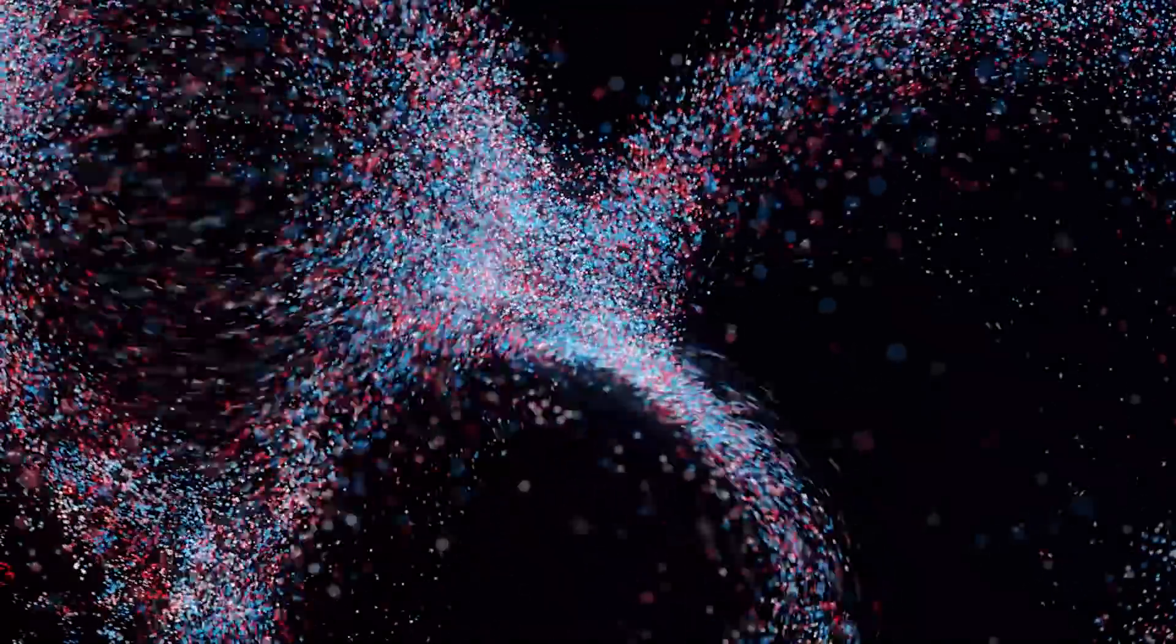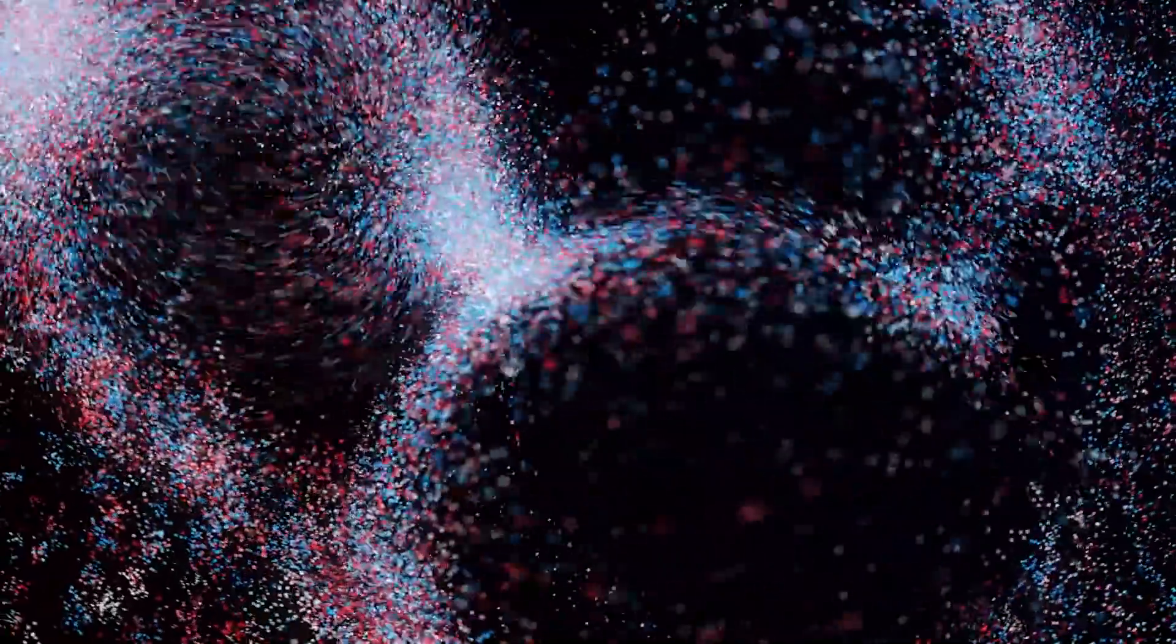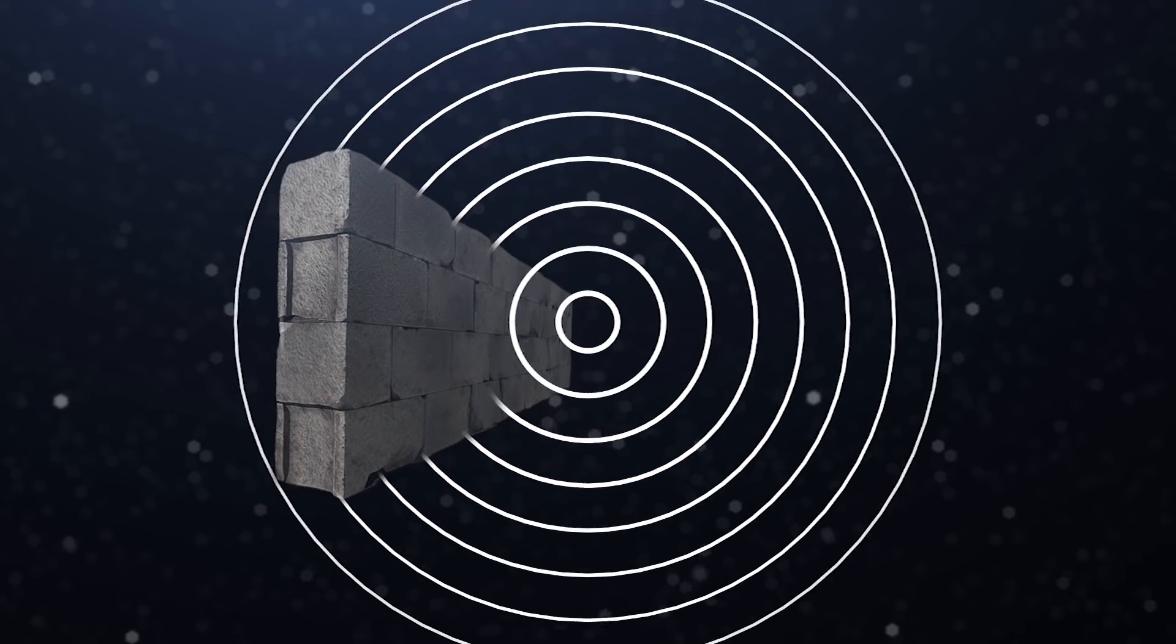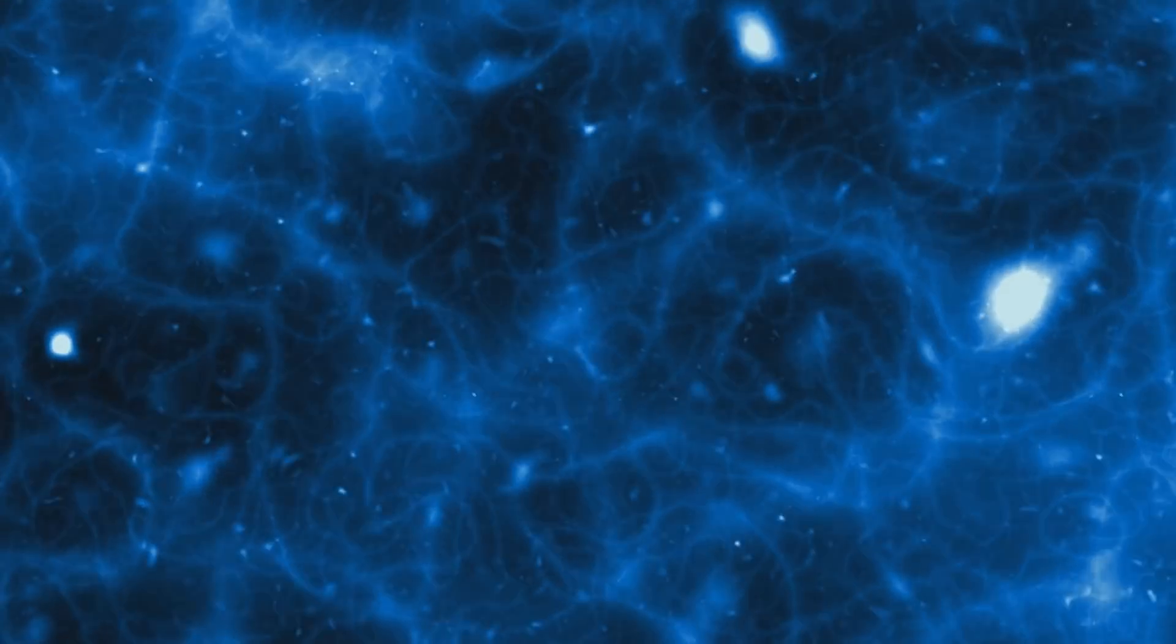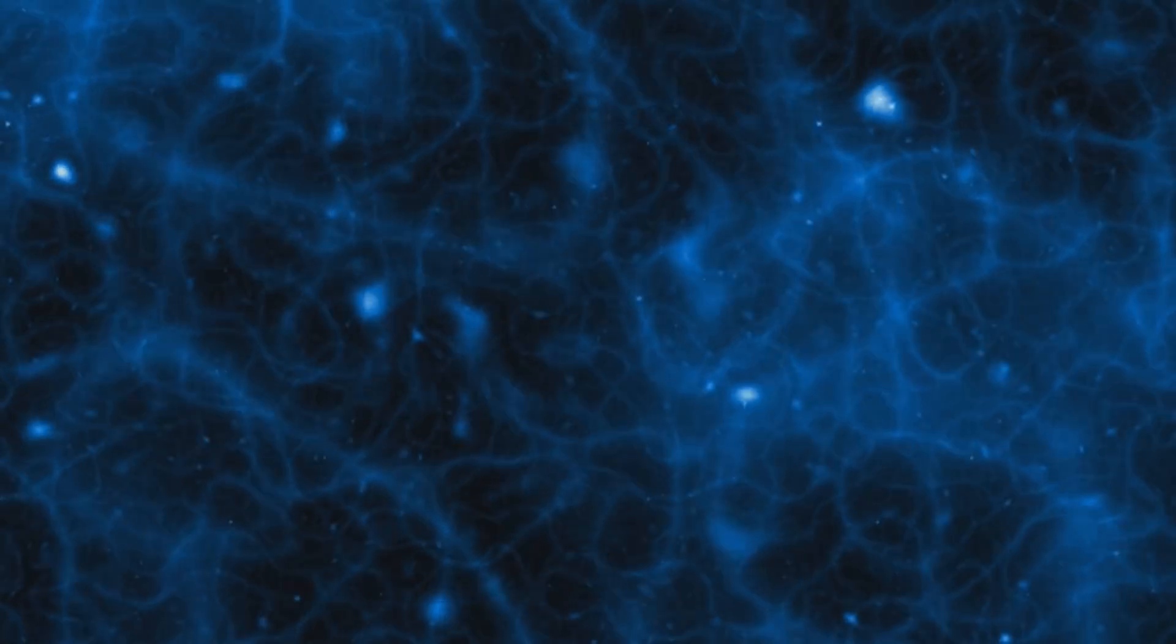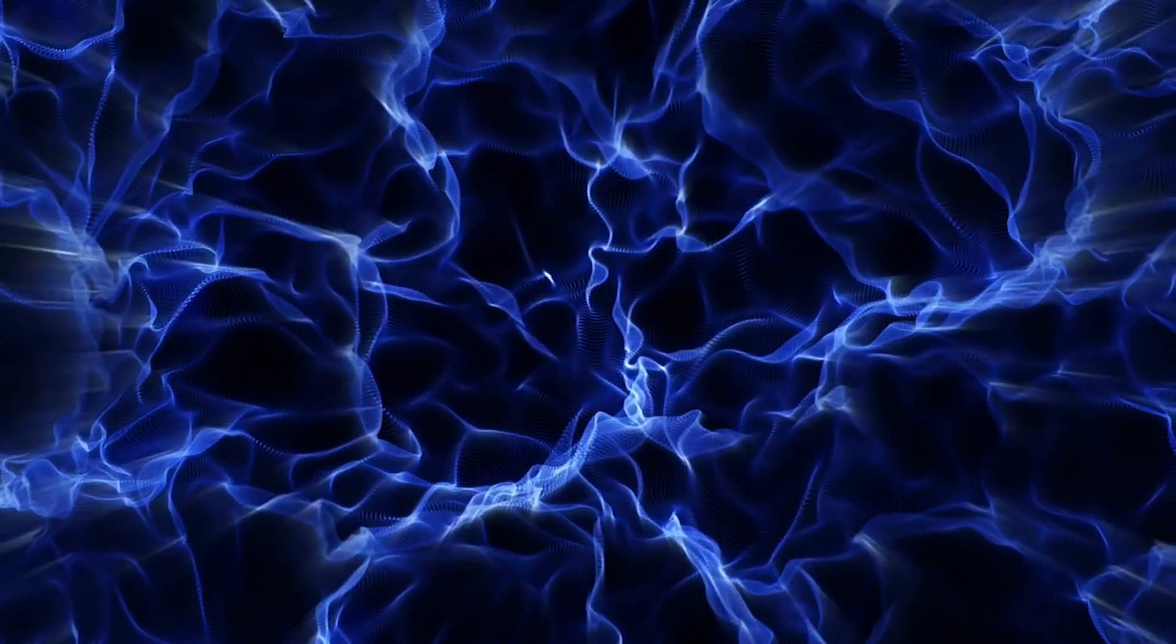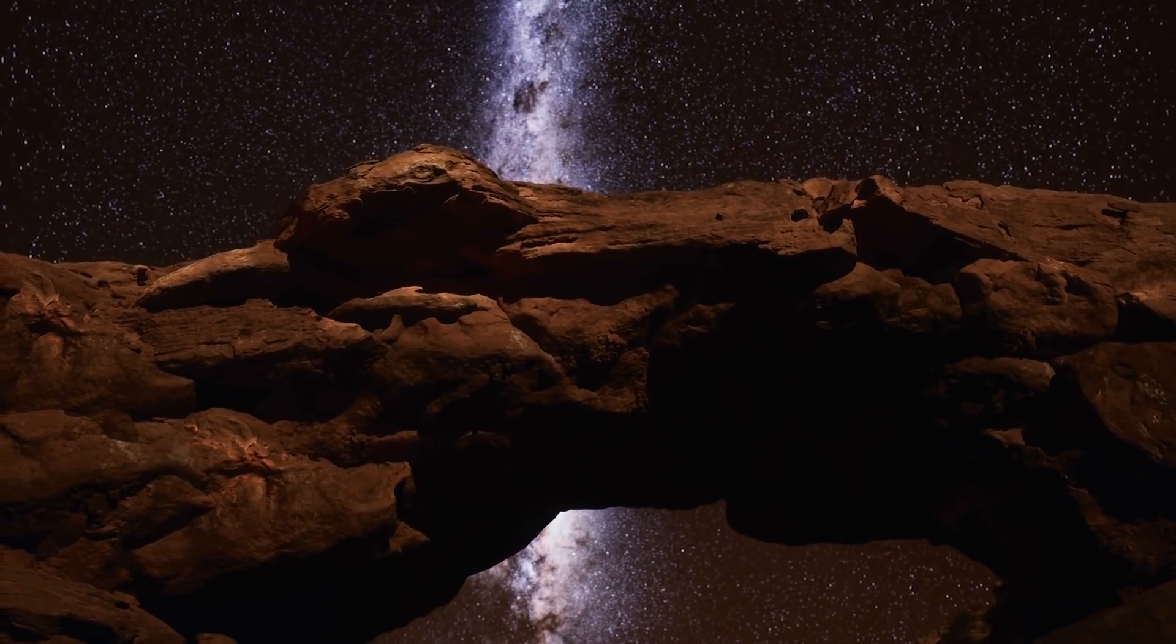Scientists believe that because of random quantum fluctuations, a particle can go through an energy barrier without having to overcome it, similar to how radio waves can travel through walls. In case scientists are right about the metastability of our universe, the Higgs field can descend to its true vacuum and cause vacuum decay. But what exactly would happen, and should we be scared?